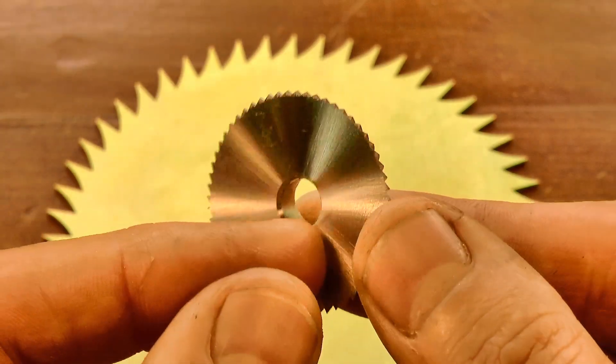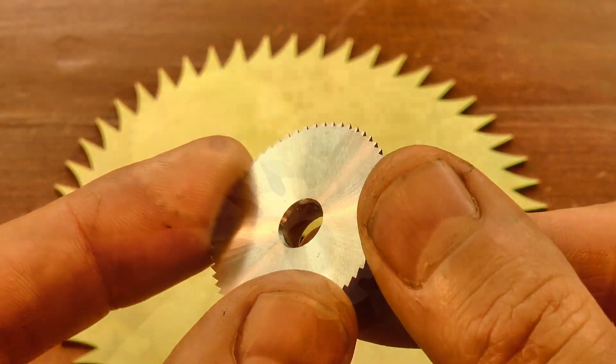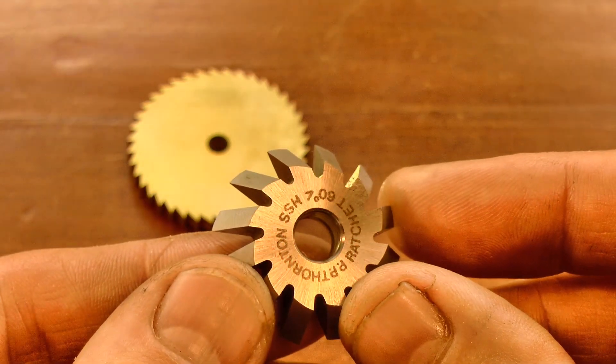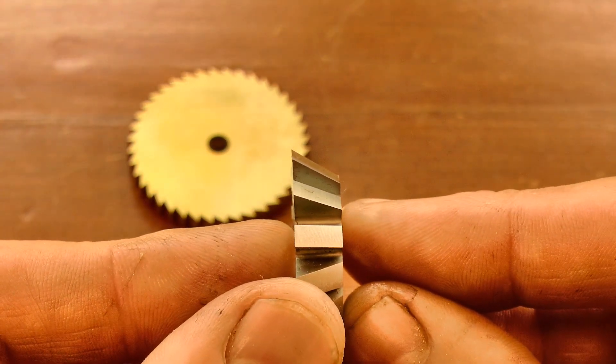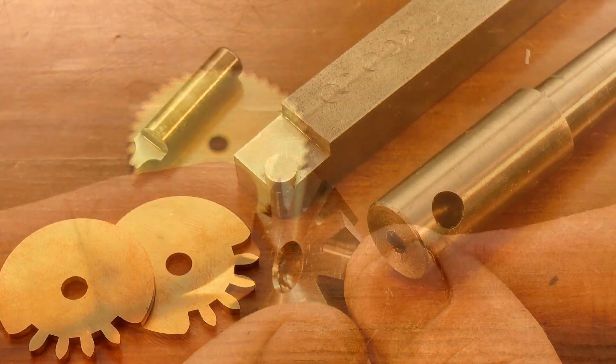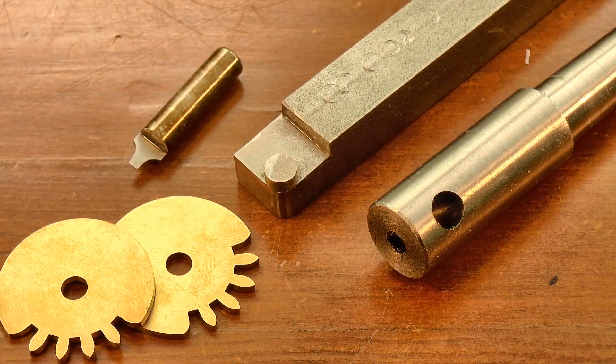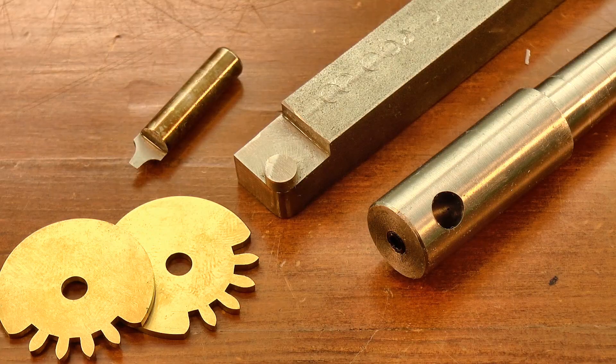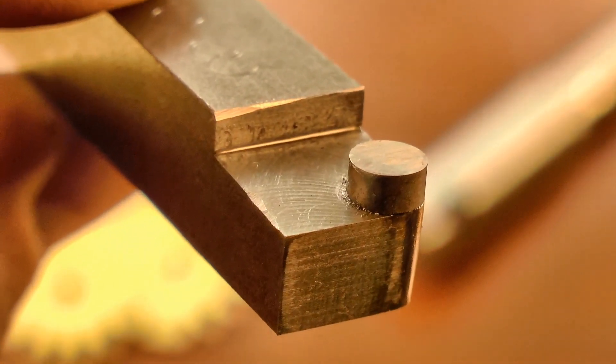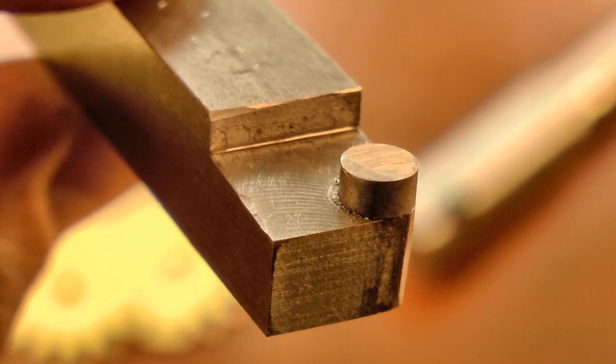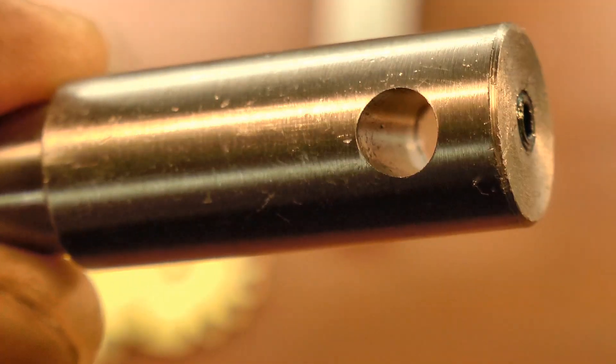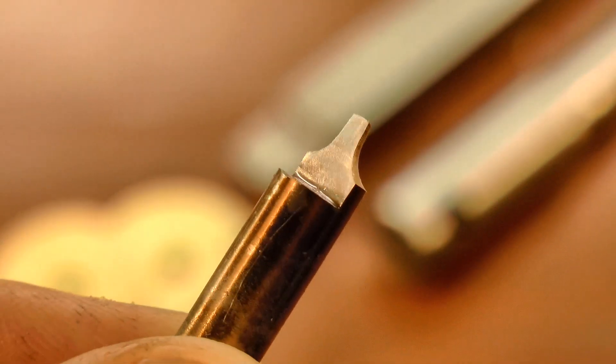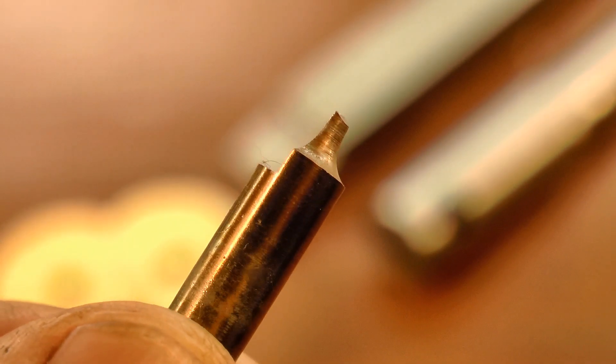Some wheels require different profile cutters, the escape wheel for instance, and the ratchet, and there are no commercial cutters available to make the stop work wheels. They have a rather large tooth pitch, so require a custom cutter. I made this button tool to cut the tooth profile, and this arbor to hold it in the spindle, and here's the finished cutter, hardened and tempered.